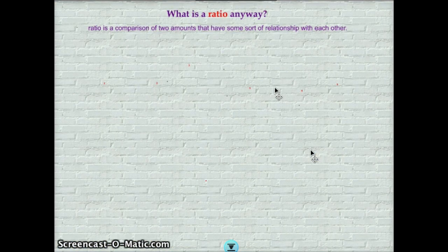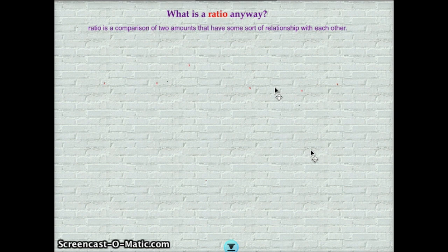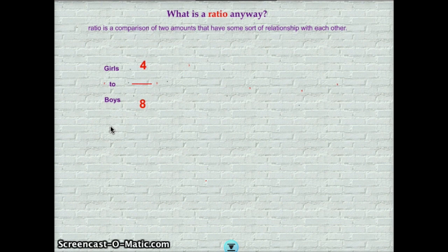When we talk about ratio, what we're really talking about is a comparison of two amounts that have some kind of relationship with each other. A really simple way to think about that is just to think about in our classroom the number of girls to the number of boys there are. And you may have noticed that in the case of our classroom, there are four girls and eight boys.